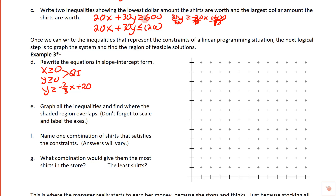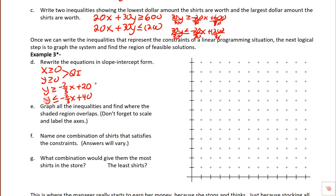Now for the last one, we move the 20X to the other side by subtracting, giving 30Y ≤ −20X + 1,200. Subtracting doesn't change the direction of the inequality. We divide everything by 30 again. That gives us Y ≤ −⅔X + 40, since 1,200 divided by 30 is 40. So now we've got all inequalities in a graph-friendly format. These first two just mean we're working in quadrant one, which we already have the graph set up for.